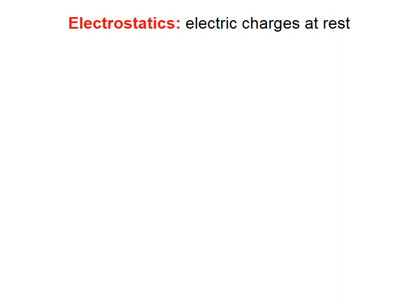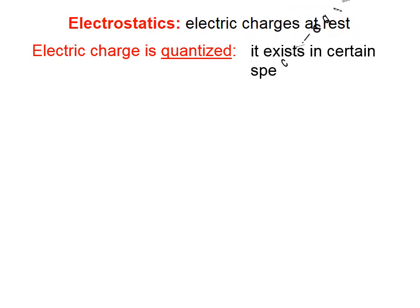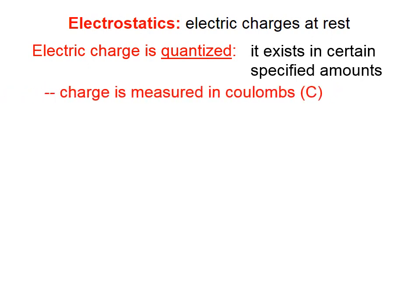Electrostatics refers to electric charges at rest. Electric charge is quantized, and what that means is it exists in certain specified amounts. There are certain values of electric charge that are possible, and other values are not possible.